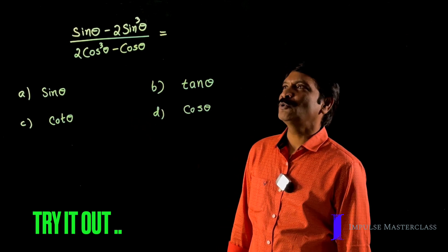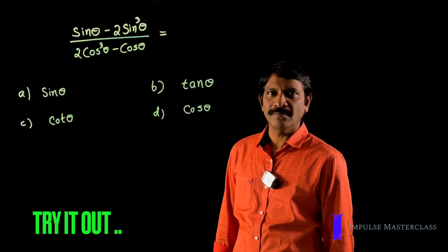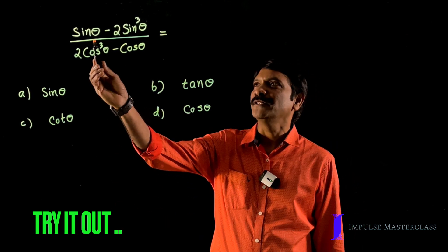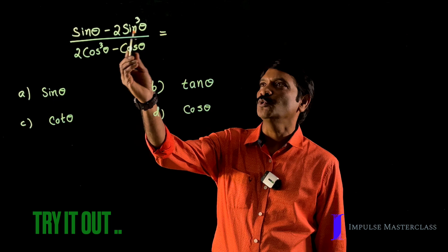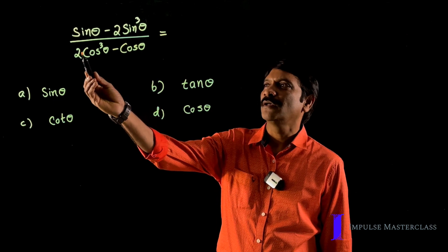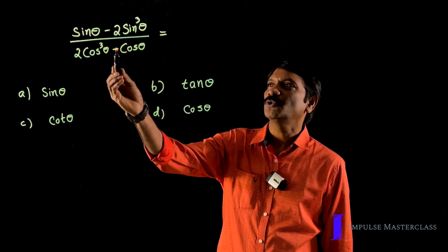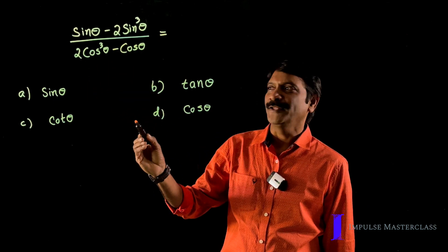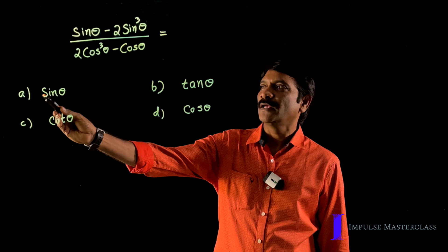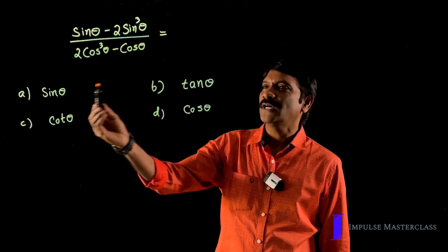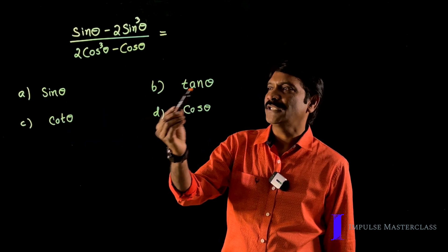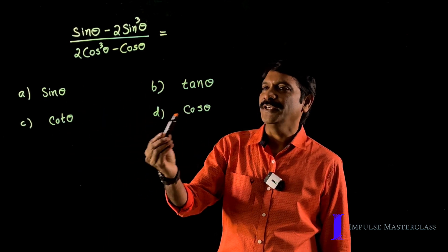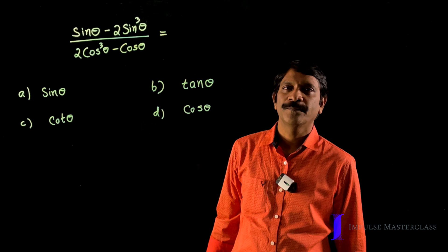Students, it is time for you to solve a problem. Solve this: (sin θ − 2sin³θ)/(2cos³θ − cos θ). The options are a) sin θ, b) tan θ, c) cot θ, and d) cos θ.